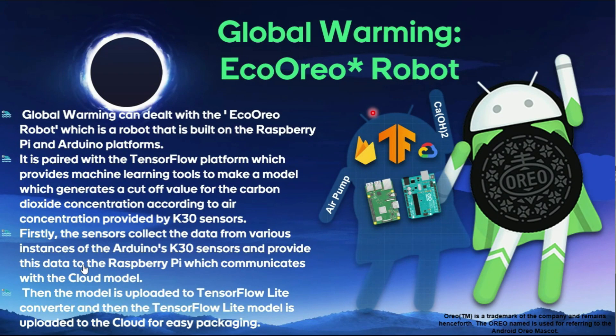Next we have Global Warming. The solution for global warming is the Eco-Oreo robot — just a small disclaimer, Oreo is a trademark of the company, and the name is used here to refer to the Android Oreo mascot. Global warming can be dealt with using the Eco-Oreo robot, which is built on the Raspberry Pi and Arduino platforms. It is paired with the TensorFlow platform, which provides machine learning tools to generate a cutoff value for the carbon dioxide concentration in the air, as provided by the MQ30 and MQ135 sensors.